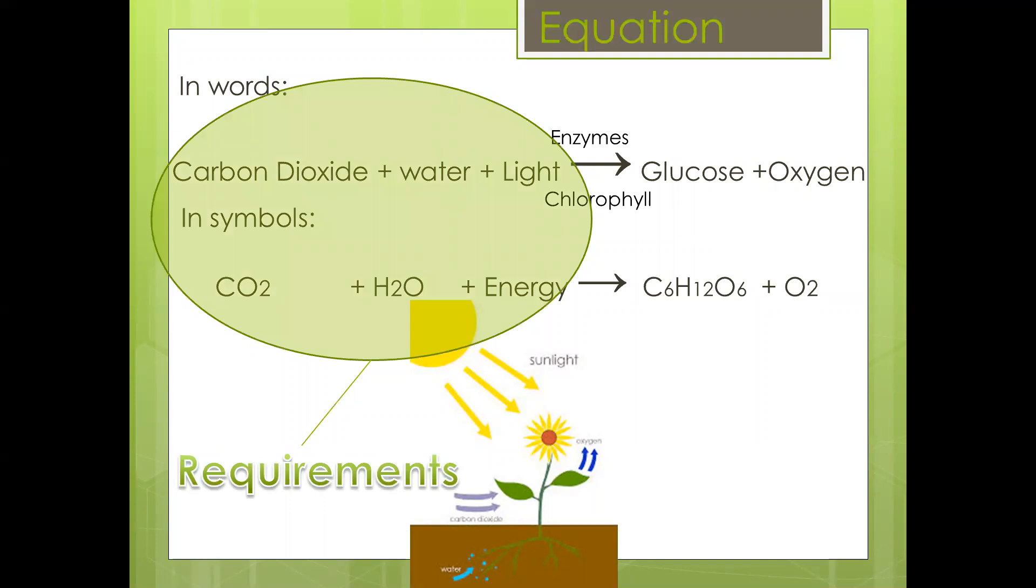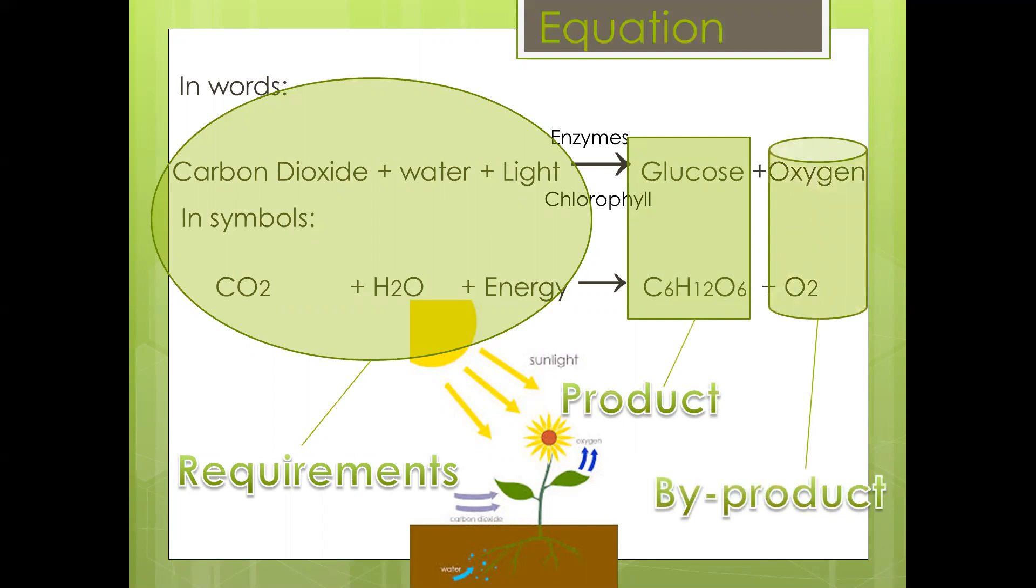And on the right-hand side, we have glucose, which is the product, and oxygen, which is the byproduct. So the focus now will be on the details of the process. What happens exactly to the carbon dioxide, the water that enters into the plant, what is the light energy used for, how does the glucose molecule form, and where does this oxygen come from.